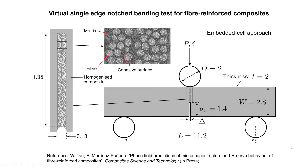We have a virtual single-edged notch-beam test for the fiber-reinforced composite. Basically, we only represent the microstructure — fiber, matrix, and interface — in a very small area, which is called the embedded cell approach. The other area is homogenized based on the elastic properties of fiber and matrix and their volume fraction. This embedded cell approach can greatly reduce computational cost. We only need to ensure that at the boundary between the embedded cell and the homogenized zone there is a continuous displacement field.